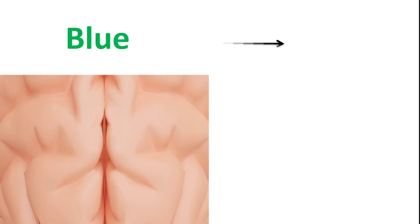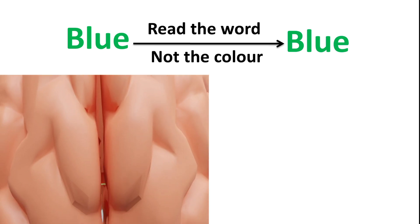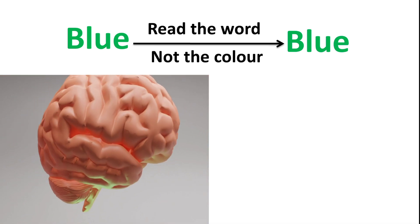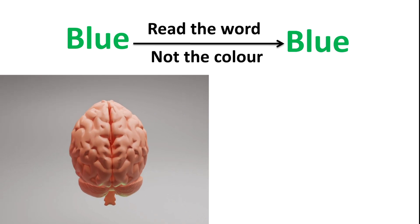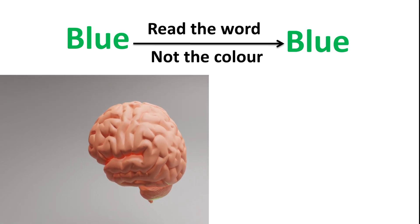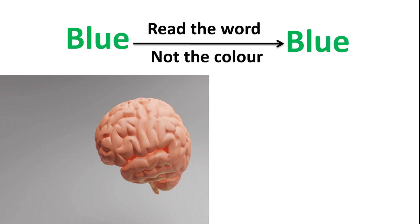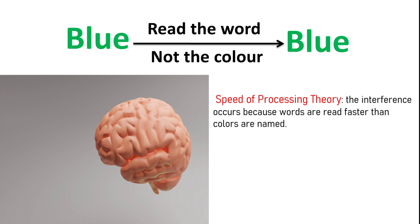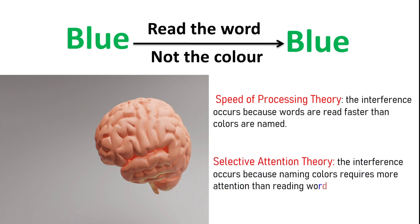There might be chances that you read the word but not the color. The interference between the different information, what the words say and the color of the words your brain receives causes a problem. There are two theories that explain this. Speed of processing theory which states that the interference occurs because words are read faster than colors are named. And a selective attention theory, the interference occurs because naming colors requires more attention than reading words.